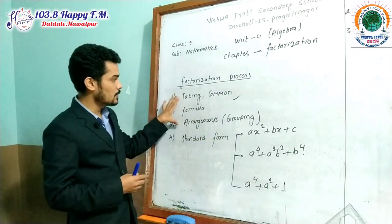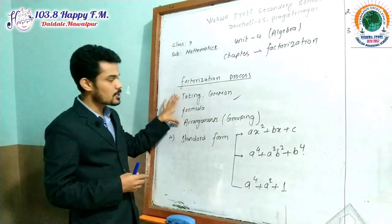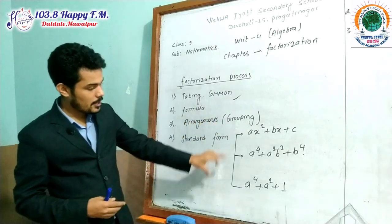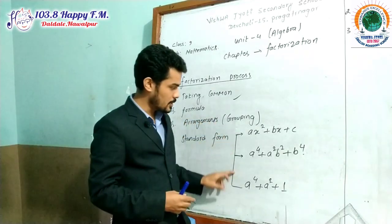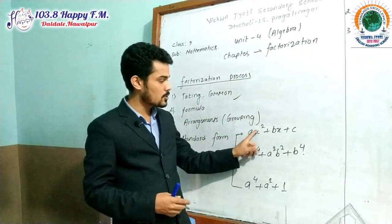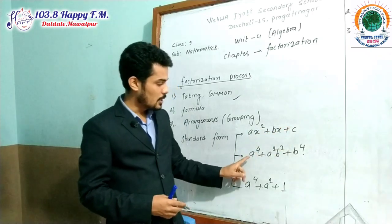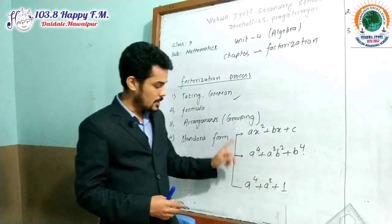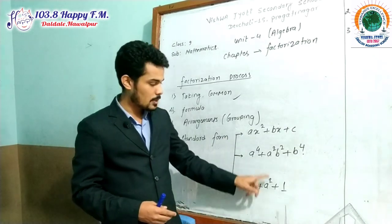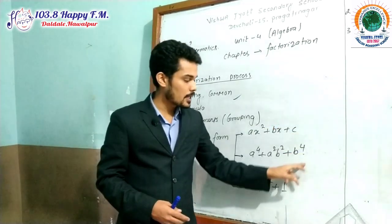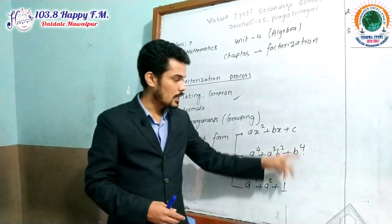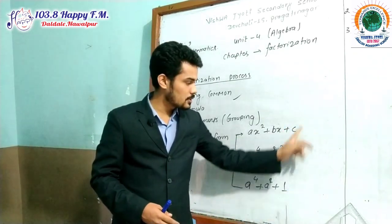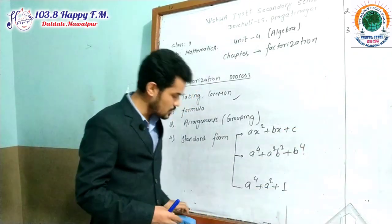And the last step is standard forms. If the above steps are not appropriate, then we will have expressions in the form of Ax² + Bx + C, or A⁴ + A²B² + B⁴, and similarly A⁴ + A² + A² + 1. These kinds of expressions are standard expressions, and we have different steps for solving these.